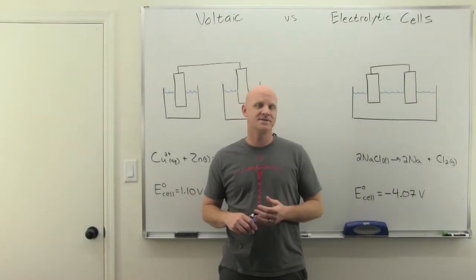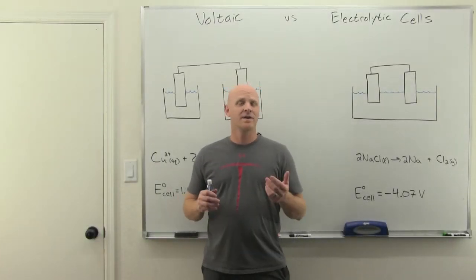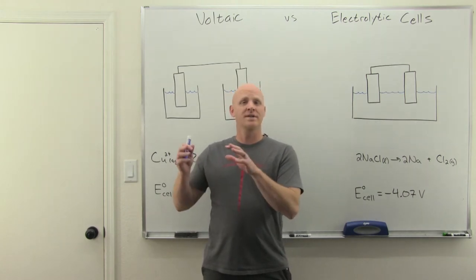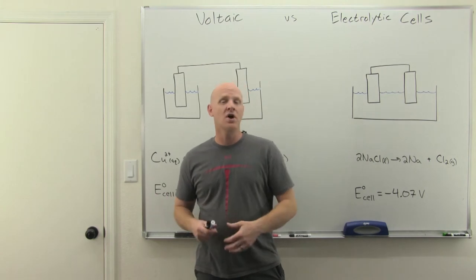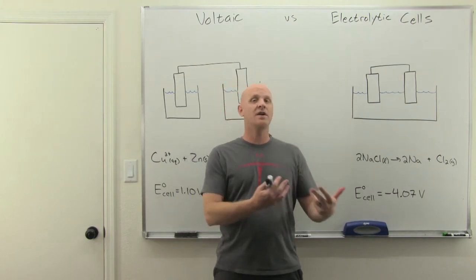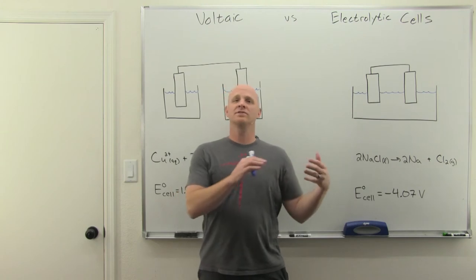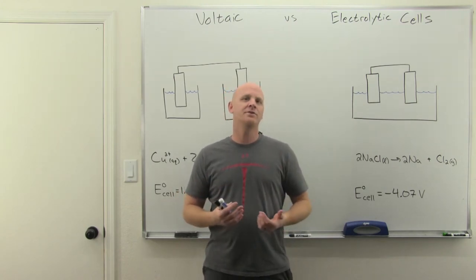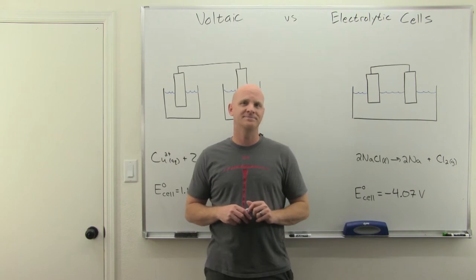Voltaic versus electrolytic cells is the topic in this lesson. We're going to compare and contrast them throughout. One is spontaneous — a reaction that naturally occurs — and one is going to be non-spontaneous, not a reaction that will naturally occur. One's going to produce electricity, one's going to consume electricity, and we're going to learn all of the characteristics of both of these types of electrochemical cells.